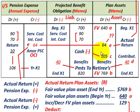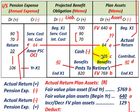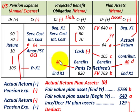Our plan assets would be increased for any contributions made to the pension plan — in this case $105,000, a cash payment. Then the plan assets are reduced by any benefits paid to retirees; it's not coming out of cash, it's just reducing your plan assets by $40,000. When it comes to these payments made to retirees, you reduce your plan assets by $40,000 and debit or reduce your pension benefit obligation — the liability account — by $40,000 as well.